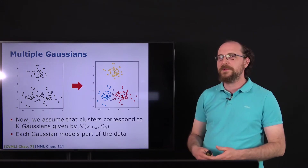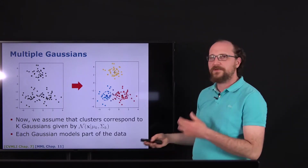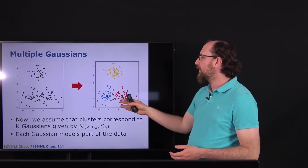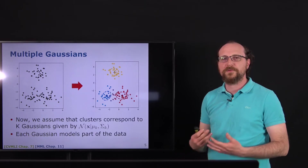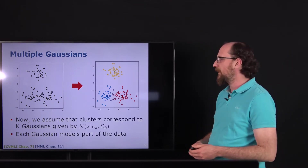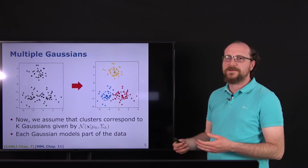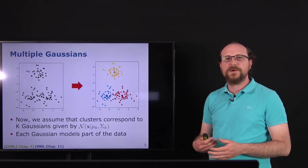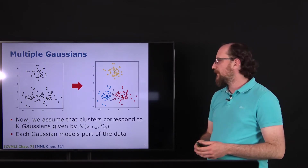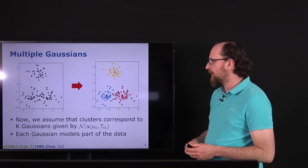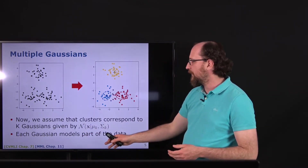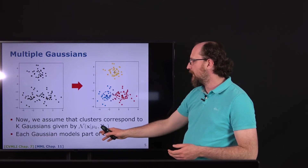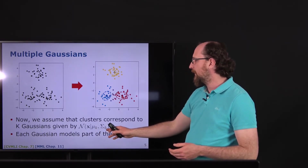We are not making a hard decision between the points — some points vary between red and blue, so we have a soft assignment. The idea is that each of the K Gaussians models some part of the data. We denote the K Gaussians by a normal distribution, with the k-th mean as mu_k and the covariance as sigma_k.